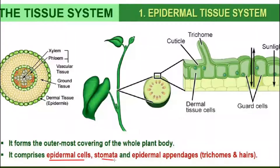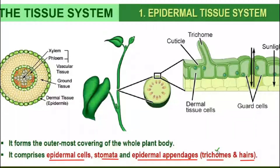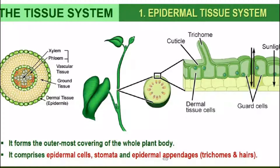Epidermal appendages include trichomes and hairs. The appendages found in the stem are known as trichomes, while the appendages found in the root are called root hairs. So the epidermal tissue system consists of epidermal cells, stomata, and epidermal appendages.